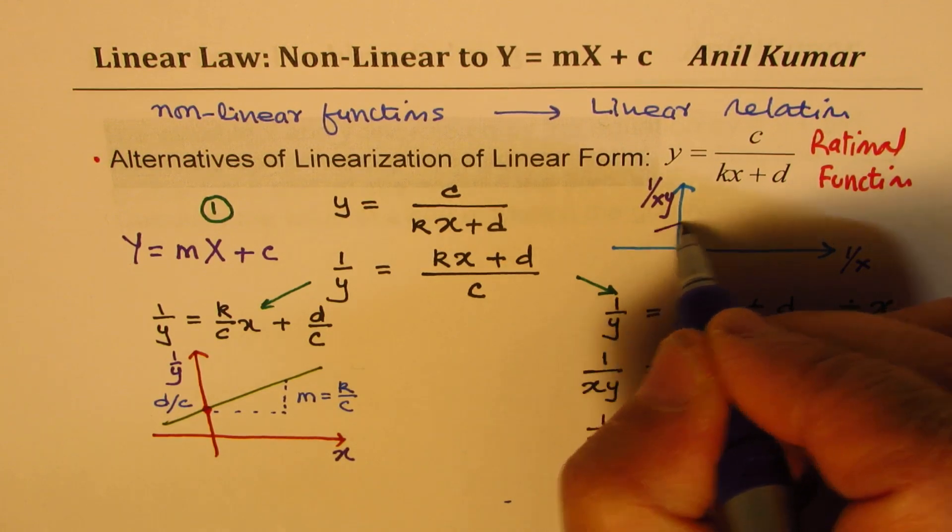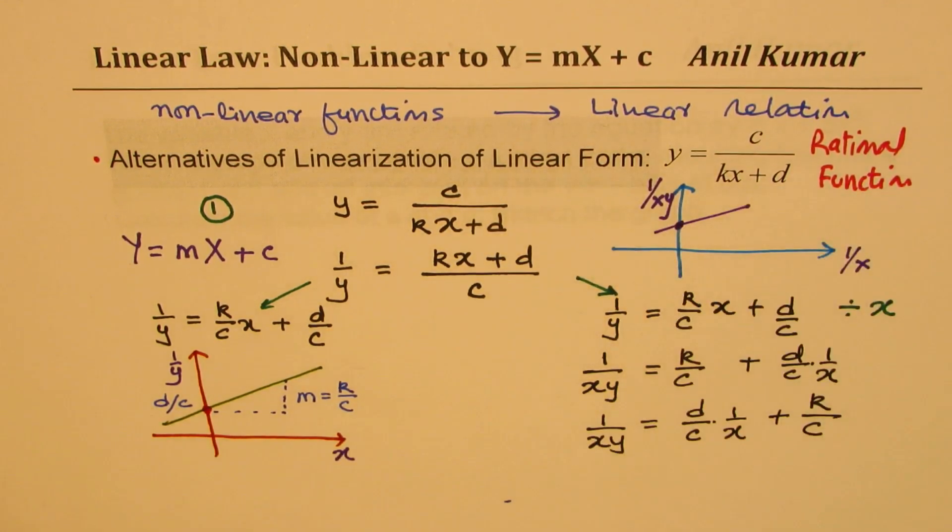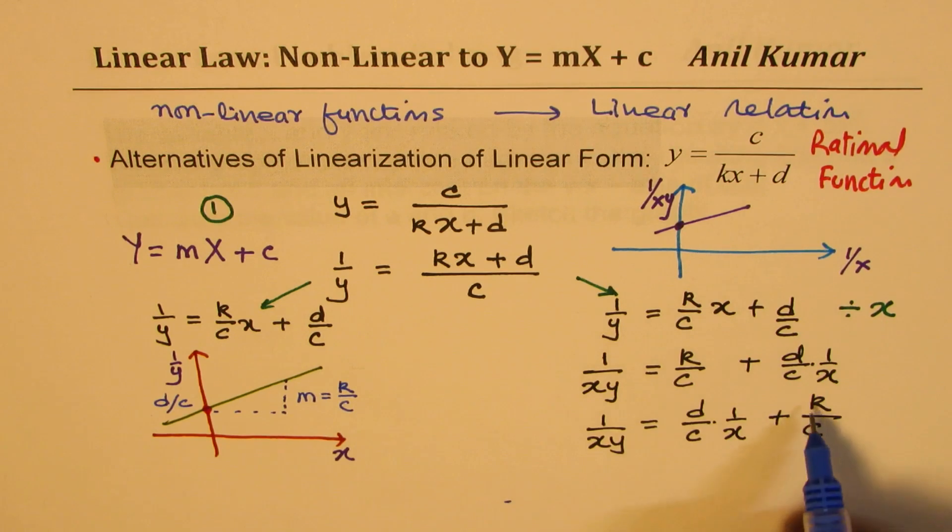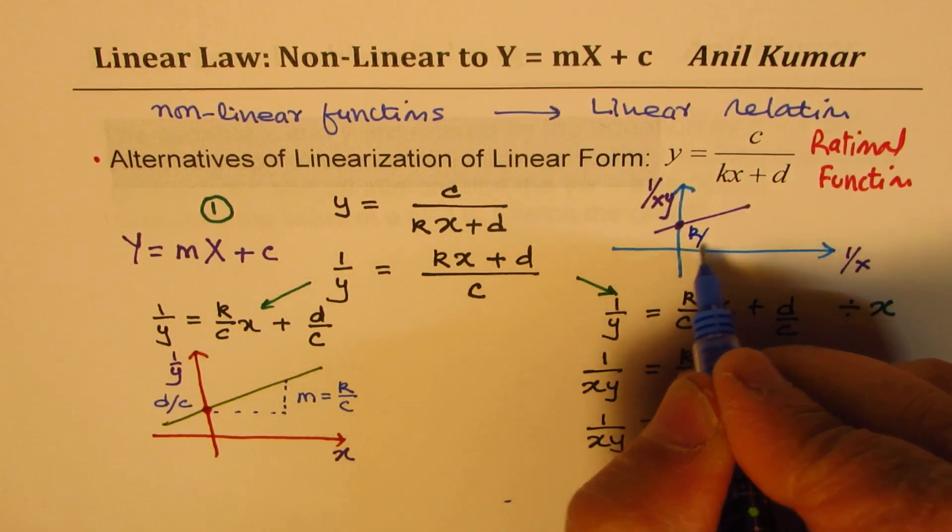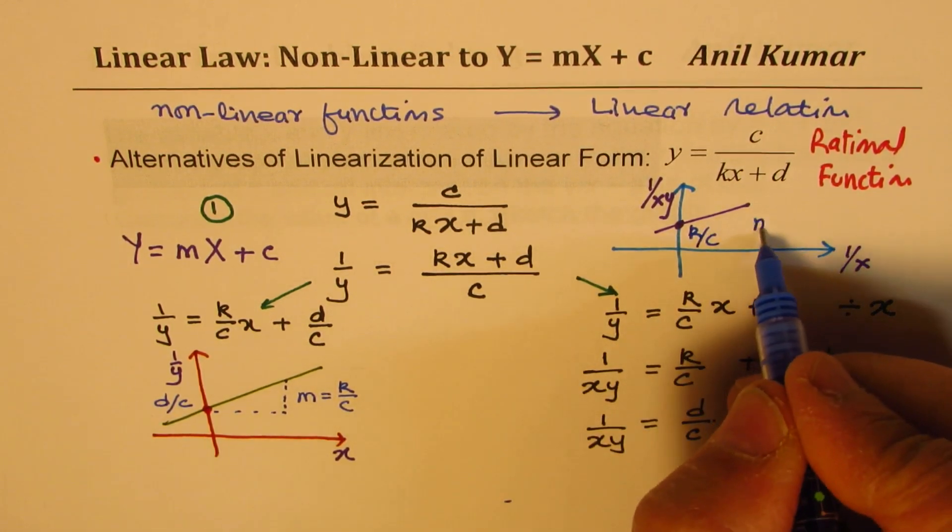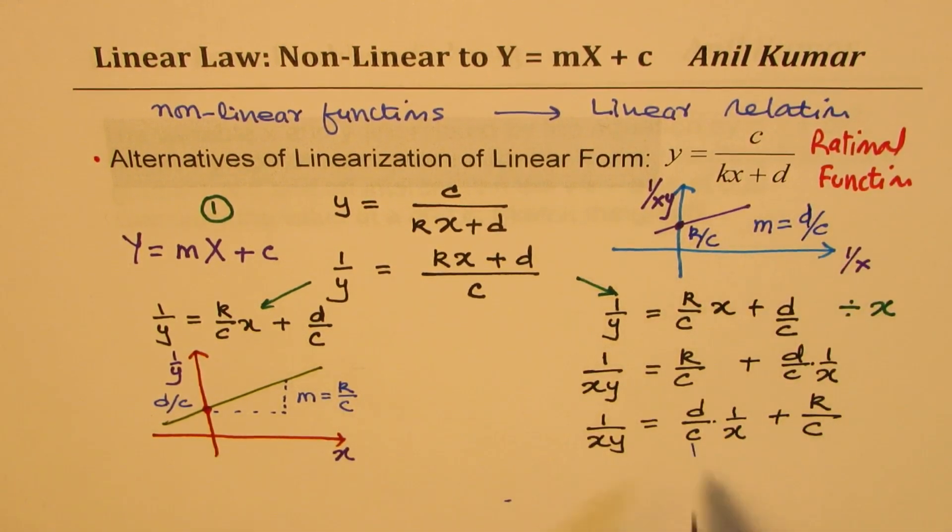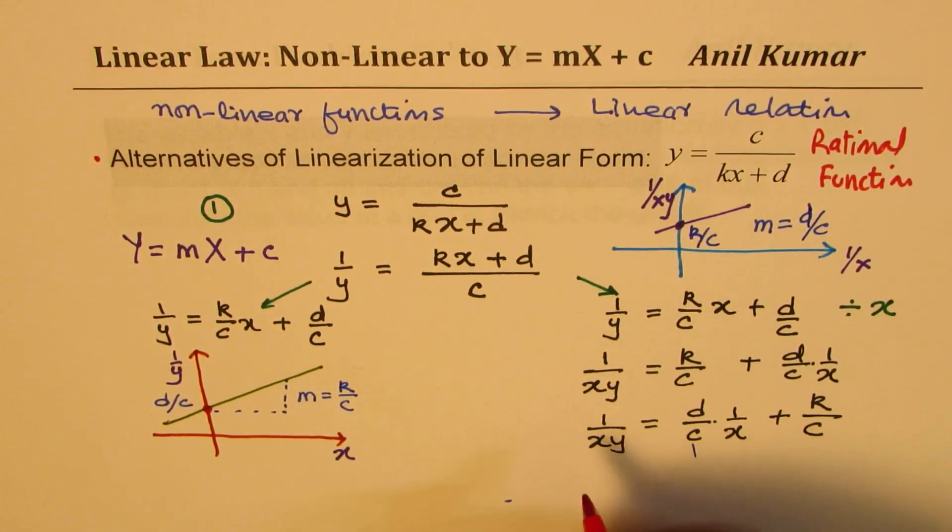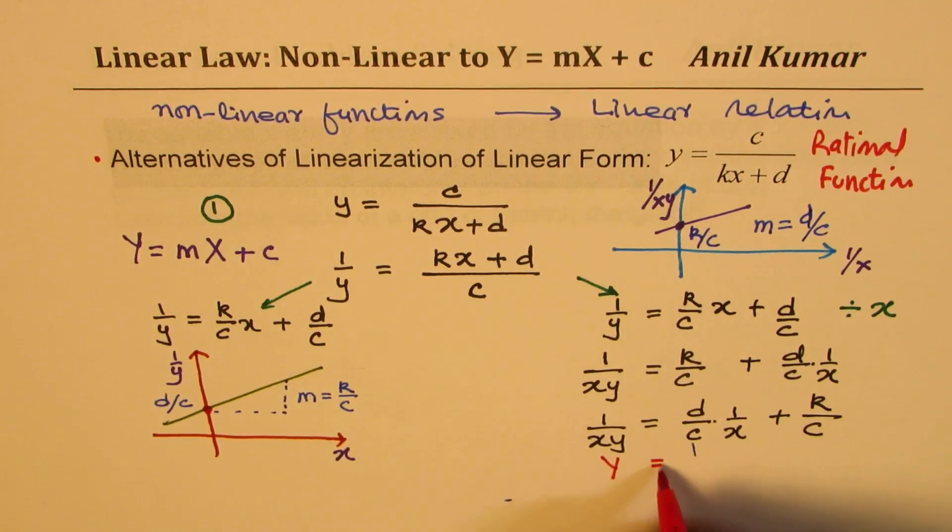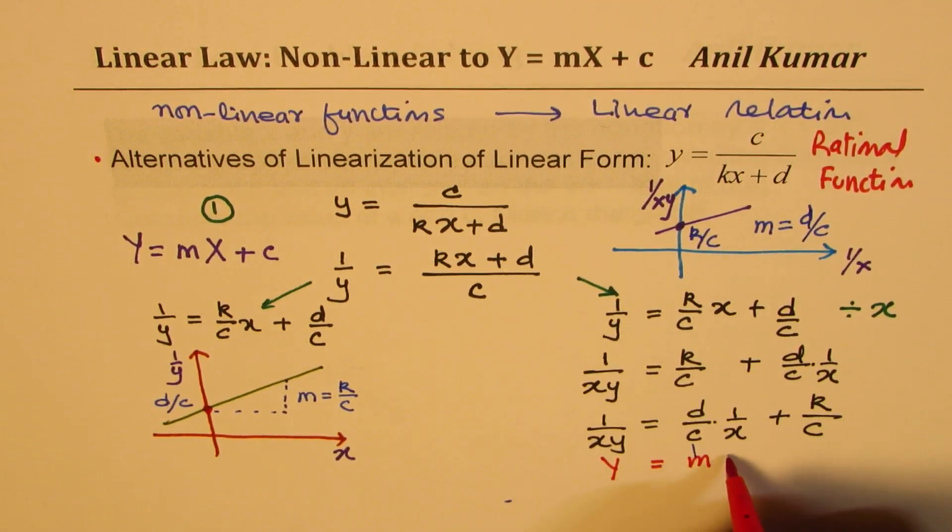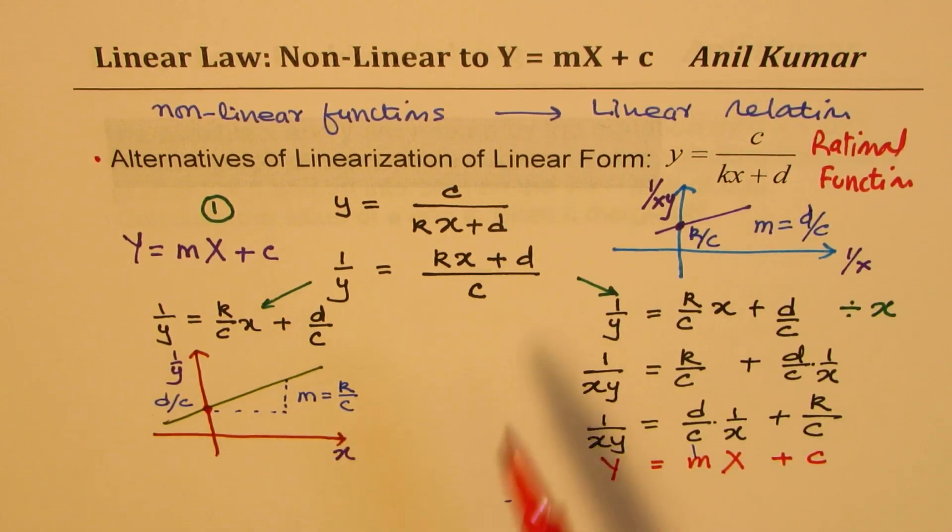So, yeah, if you have a line now here, so this point here will be what? k over c. This will be k over c, and the gradient m will be d over c. That is the gradient. So, that is how you could see this as capital Y equals to m capital X plus lowercase c. So, that is how you could interpret a rational function when it is linearized, as shown here.